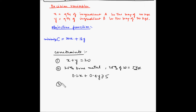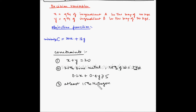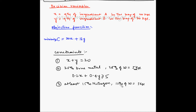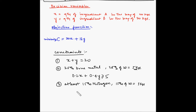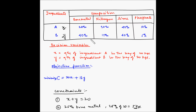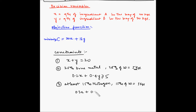The third constraint is that the fertilizer must contain at least 15% nitrogen. Since 15% of 20 = 3 kgs, for x kgs of A the nitrogen is 30% of x = 0.3x, and for y kgs of B the nitrogen is 15% of y = 0.15y. So the constraint is: 0.3x + 0.15y ≥ 3.